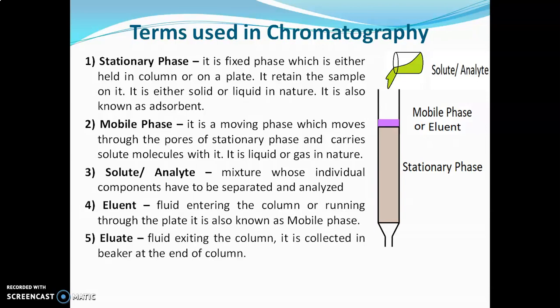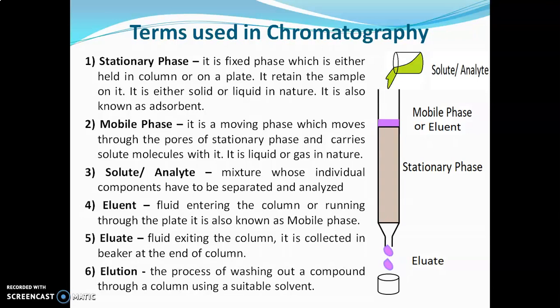Eluate is the fluid exiting the column; it is collected in a beaker at the end of the column. There is a difference between eluant and eluate: eluant is the mobile phase entering the column, and eluate is the mobile phase exiting the column, which may carry solute molecules with it. The entire process is known as elution — the process of washing out a compound through a column using a suitable solvent.